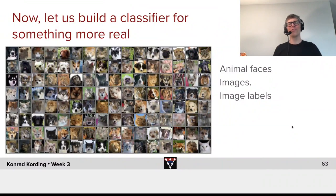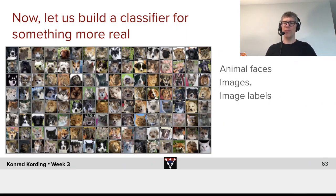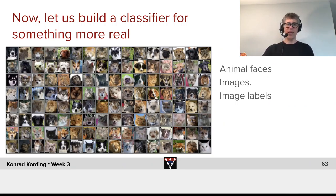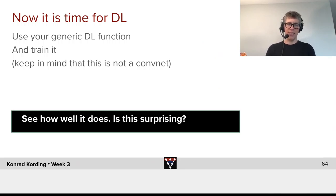Now, after all the beautiful theories, let's actually build a classifier for something really real. In this case, we'll take the animal faces dataset, which are images, and we of course also have the relevant image labels. Now it's time for some real deep learning. Use the generic deep learning function that you built before and train it on the animal faces dataset.